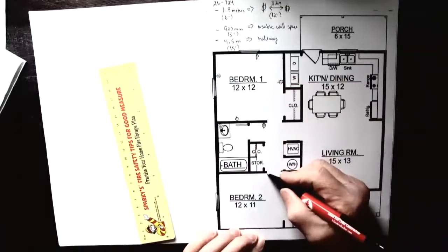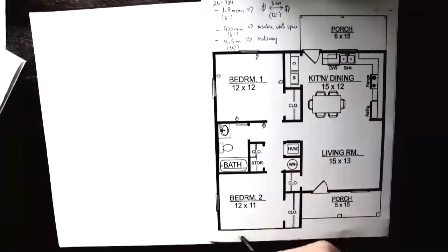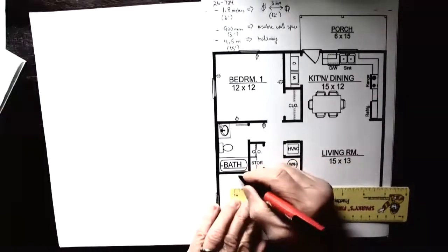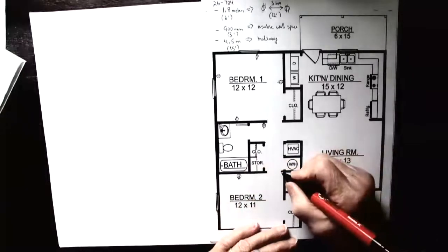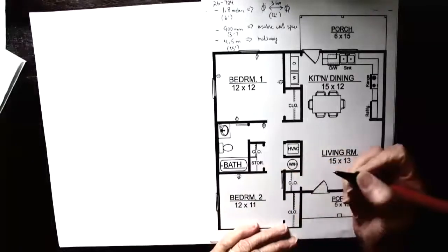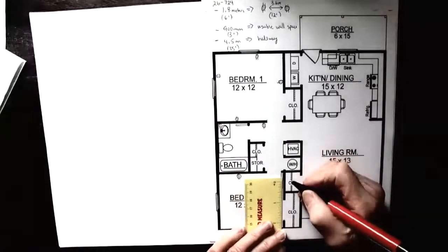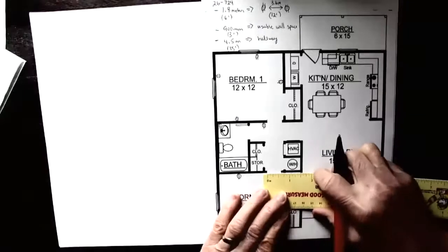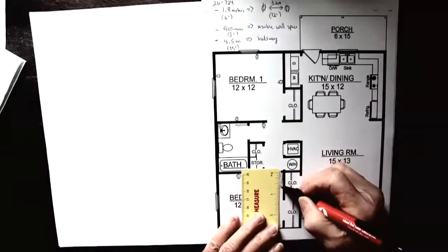Now we'll walk into bedroom two and use the same format. When I walk in the door, I'm going to go this way and make sure that my first receptacle is not more than six feet, so it's got to be before that. So I can back up a little bit, and there's my first receptacle. When the door swings open, we're assuming it is swinging open that way, so behind the door is not usable space.